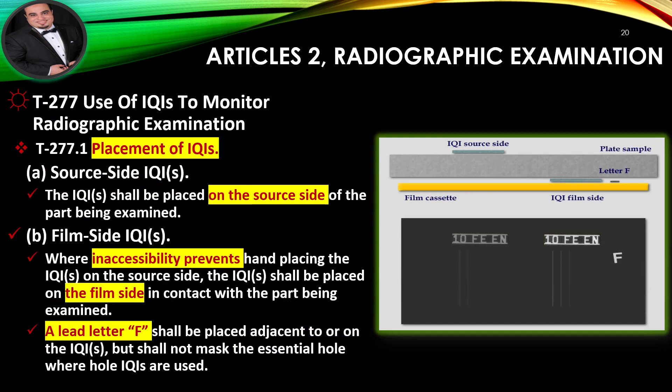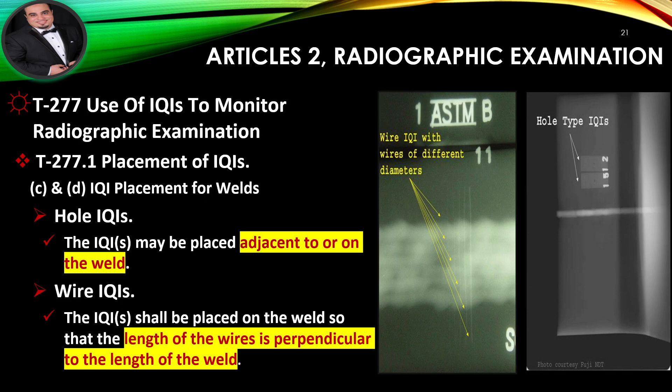Placement of IQIs — Source side: The IQI shall be placed on the source side of the part being examined. Film side: Where inaccessibility prevents placing the IQI on the source side, the IQI shall be placed on the film side in contact with the part. A lead letter F shall be placed adjacent to or on the IQI, but shall not mask the essential hole where hole IQIs are used. For hole IQIs, they may be placed adjacent to or on the weld. For wire IQIs, they shall be placed on the weld so that the length of the wires is perpendicular to the length of the weld.